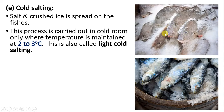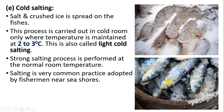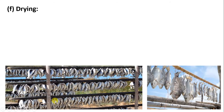In cold salting, the salt is crushed with ice and spread over the fishes. This process is carried out in a cold room where the temperature is about 2 to 3 degree Celsius — this is called light cold salting. In strong salting, the process is conducted at normal room temperature with a larger amount of salt. It is a very common practice adopted by fishermen at the seashore. Small size fishes are sun dried and preserved for a long period of time.